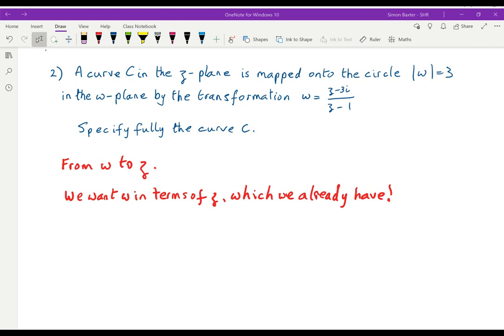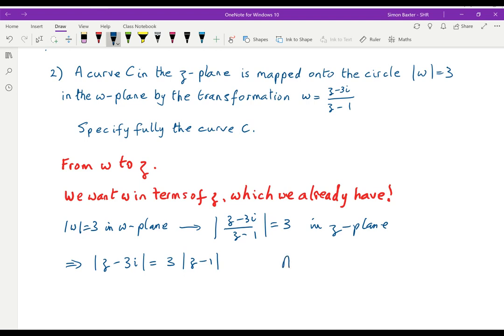In this case we have mod W equals 3 in the W plane, where W is z minus 3i over z minus 1, which equals 3 in the Z plane. Or alternatively this curve came from mod z minus 3i over z minus 1 equals 3 in the Z plane. Multiplying both sides by mod z minus 1, mod z minus 3i is equal to 3 times mod z minus 1. This is no longer an easy straight line, we actually have Apollonius's circle.